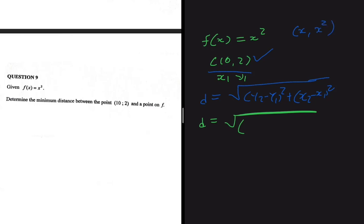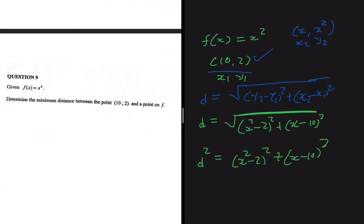Substituting into the distance formula, we get d = √[(x² - 2)² + (x - 10)²]. I don't like square roots, fractions, and all that, so I'm going to square both sides to avoid dealing with the square root. That gives us d² = (x² - 2)² + (x - 10)².